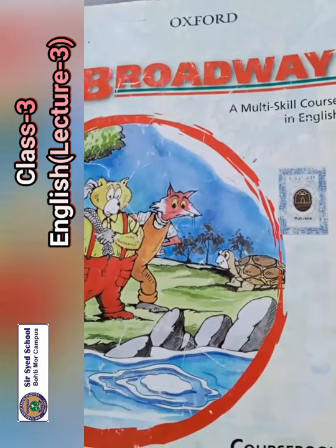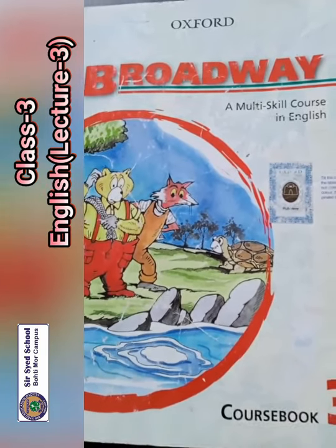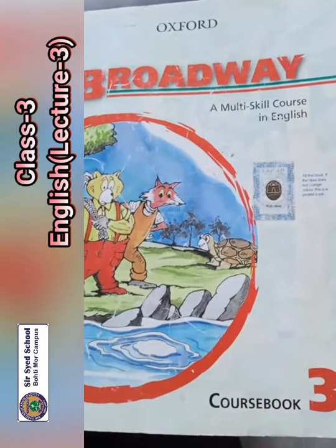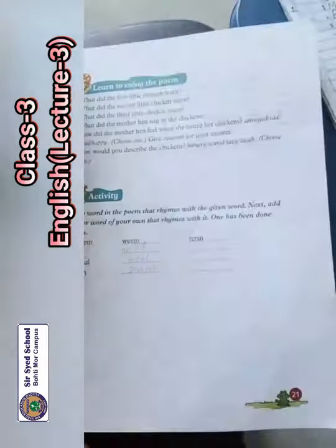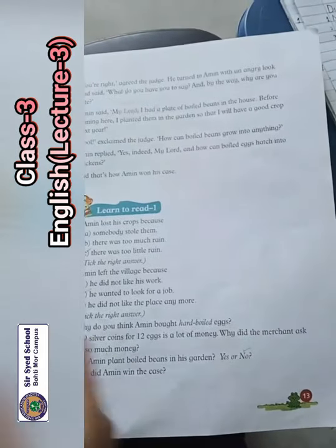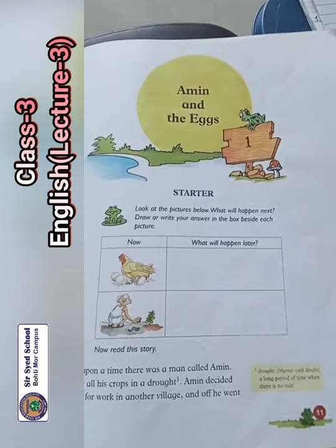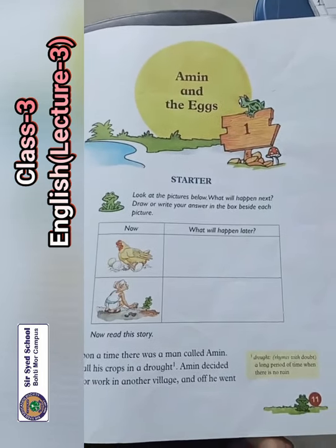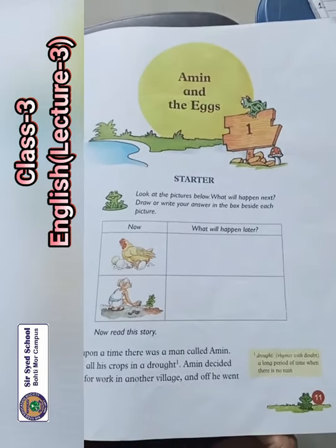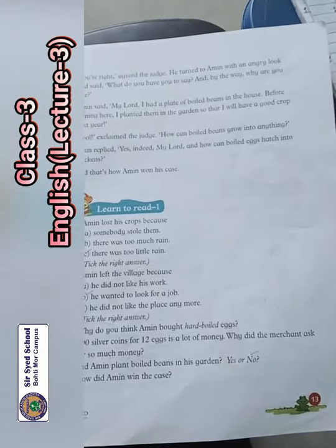Bismillahirrahmanirrahim. Assalamu alaikum, dear students. How are you all? Hope you are fine. Welcome to Class 3. This is lecture number three. In the previous lecture we have done the question answers, word meanings, and word sentences of Unit One. The name of the unit is Ameen and the Eggs. In the very first lecture we have done the reading and also the dictation words of this unit. Now we are going towards the exercise of this unit.